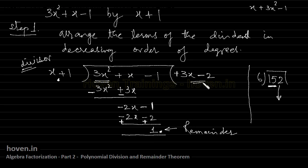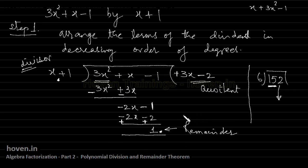This is the end result: the quotient is 3x − 2 and the remainder is 1. I will take one more example so that you understand the whole idea, and then I will move on to the summary points.